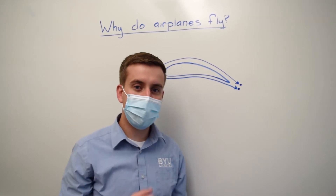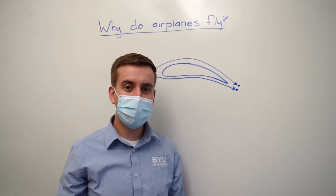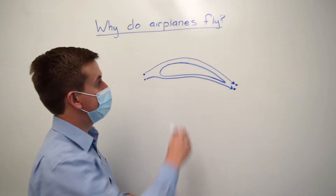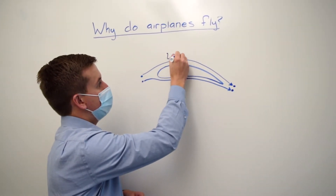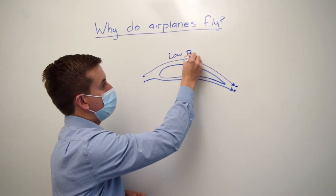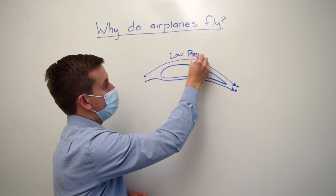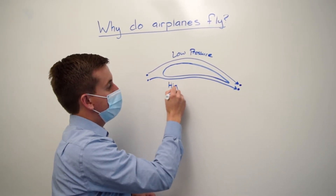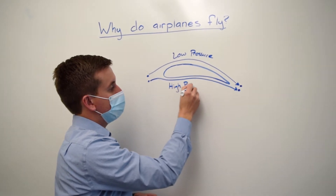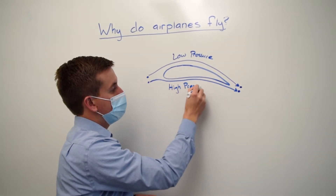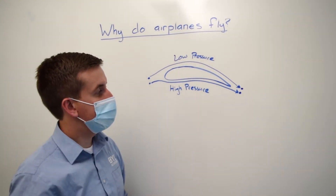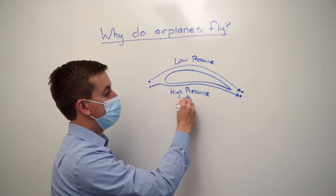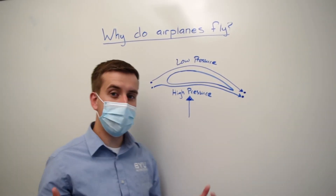If it travels faster, we learn from Bernoulli's equation that we would have low pressure on top, and down below we will have high pressure. Therefore, the high pressure pushes up, and the airplane flies.